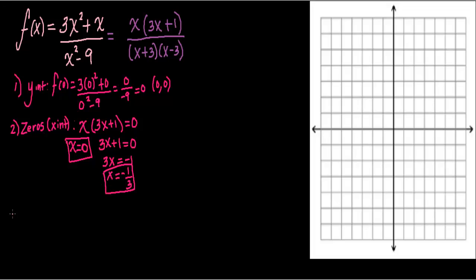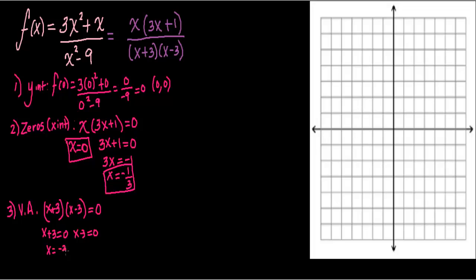Step 3: find the vertical asymptotes. Take the denominator and set it equal to 0. (x + 3)(x − 3) = 0. By the zero product property, x + 3 = 0 gives x = negative 3, and x − 3 = 0 gives x = 3. Those are our two vertical asymptotes.